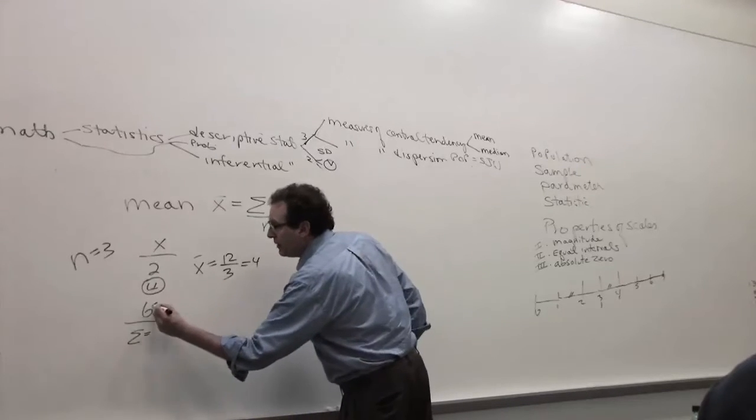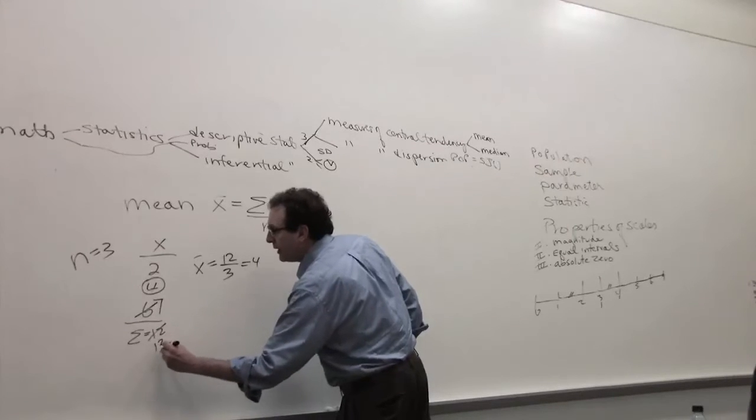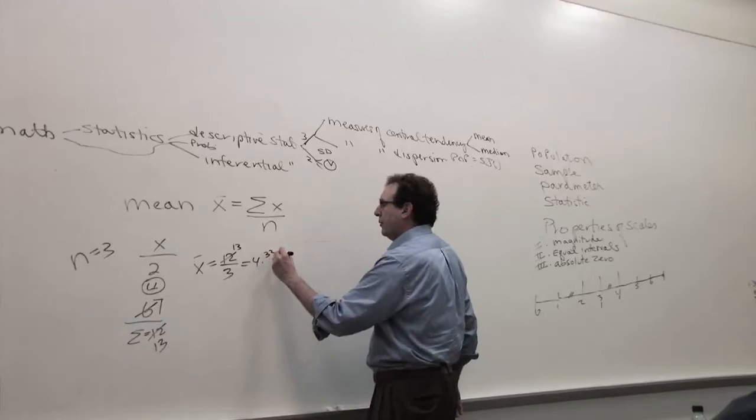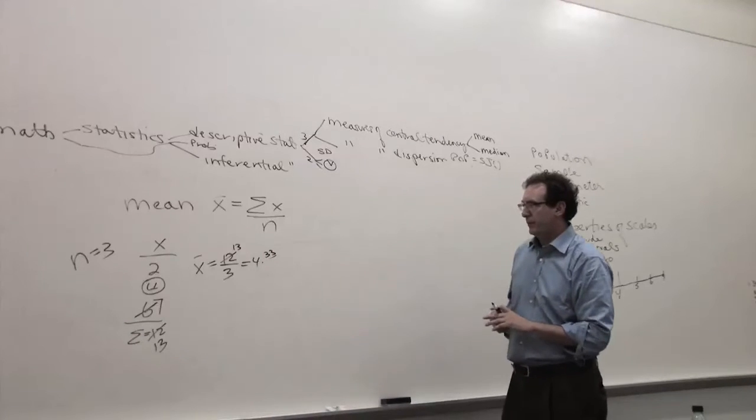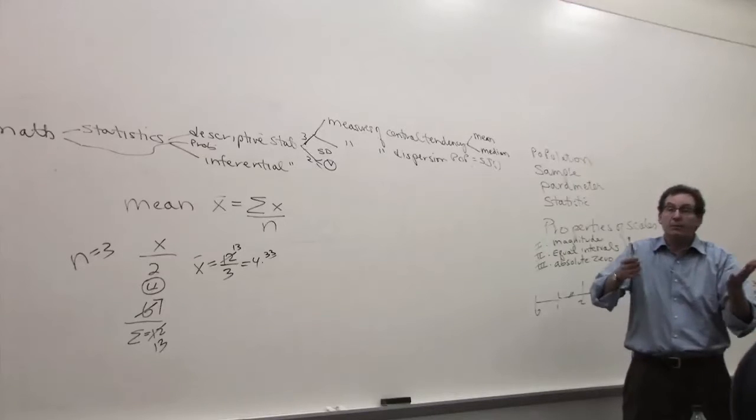If this number would have been a 7, instead of being a 12, this would have been a 13, so the average would have been 4.33 in that case. Which means that proves the average doesn't have to be one of the original numbers, it could be someplace close to the middle.